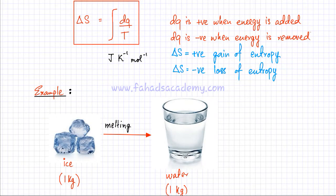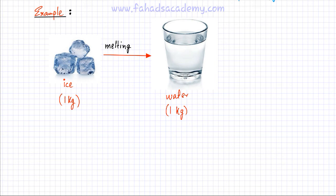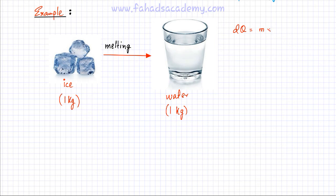Now I'll use this formula in an example: I have 1 kg of ice melting into 1 kg of water, and I want to find the entropy change. From the two images, entropy is increasing, so delta S will be positive. The first thing to find is dQ — the energy absorbed by the ice from the environment to melt it — which is the latent heat of fusion: dQ equals mass times the latent heat of fusion of ice, M × L_F.